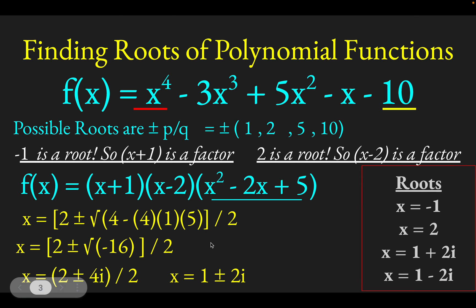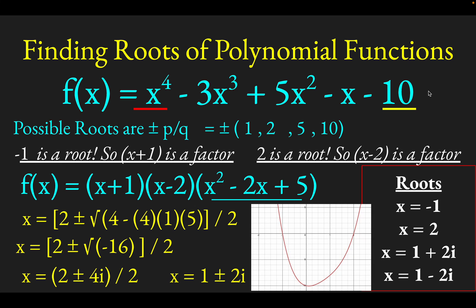So in all their glory, our roots are negative 1, which we found right out of the gate, 2, 1 plus 2i, and 1 minus 2i. So what that means is if you were to graph this function, it should just cross the x-axis two times. Here, in fact, is what the graph of this function looks like, and indeed you can see it crosses the x-axis at negative 1 and at positive 2.